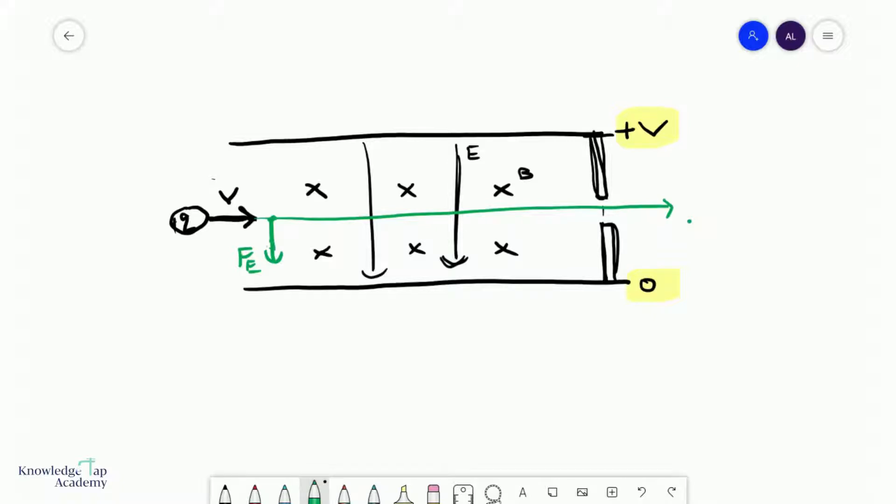However, it would experience a magnetic force. Using Fleming's left-hand rule - second finger points into the page, third finger points to the right - you'll see that the magnetic force FB points upwards like so.